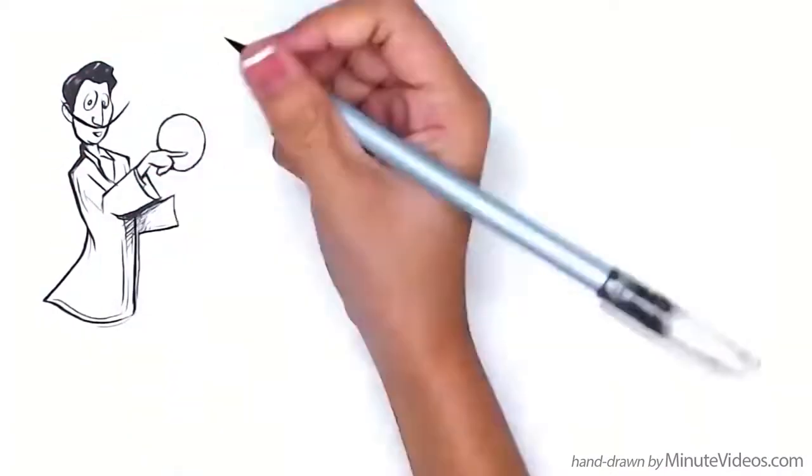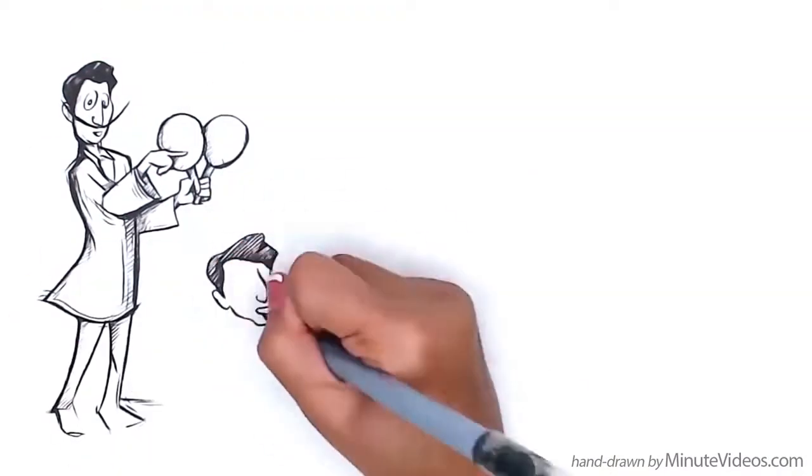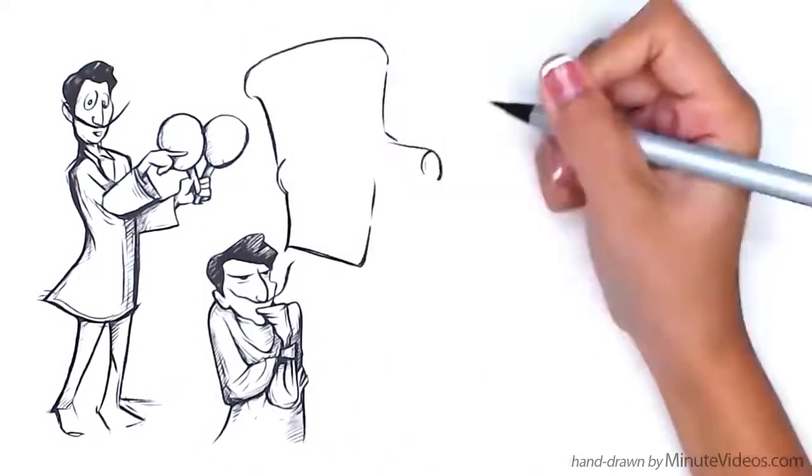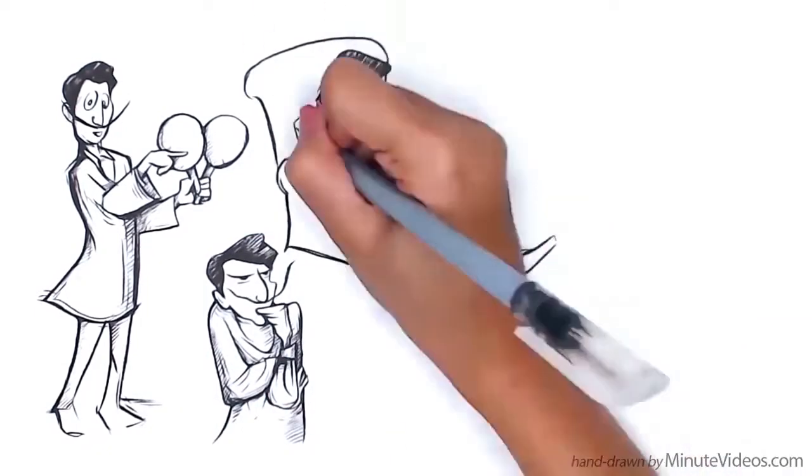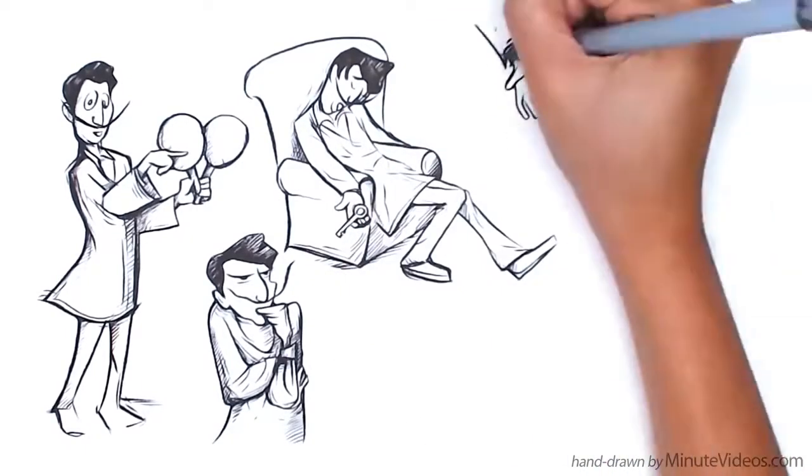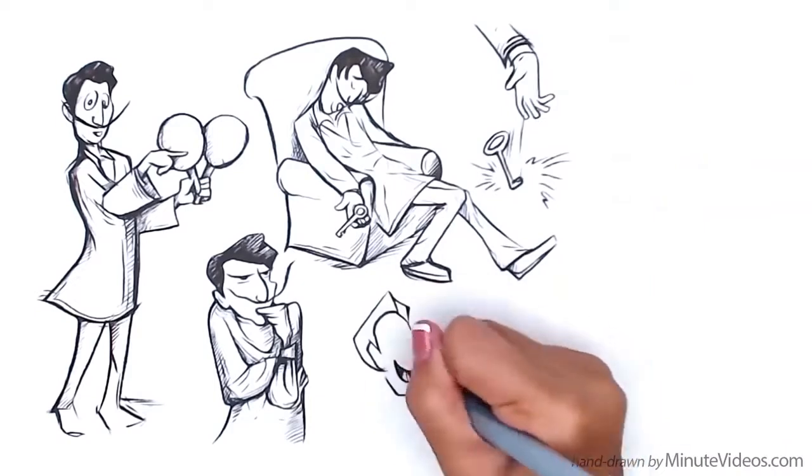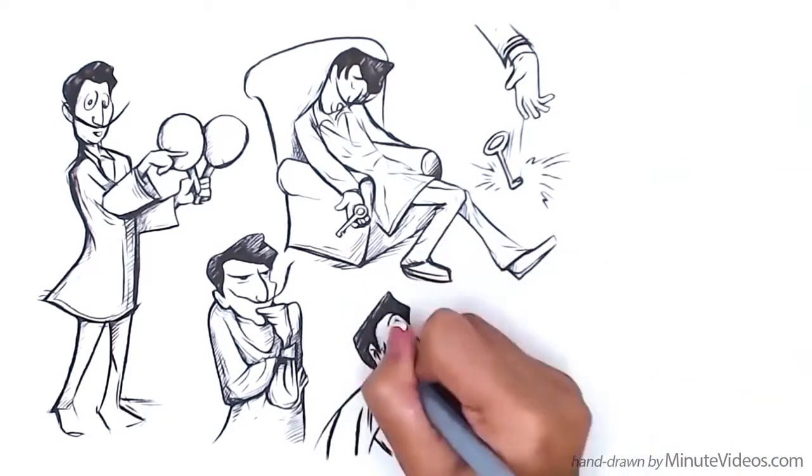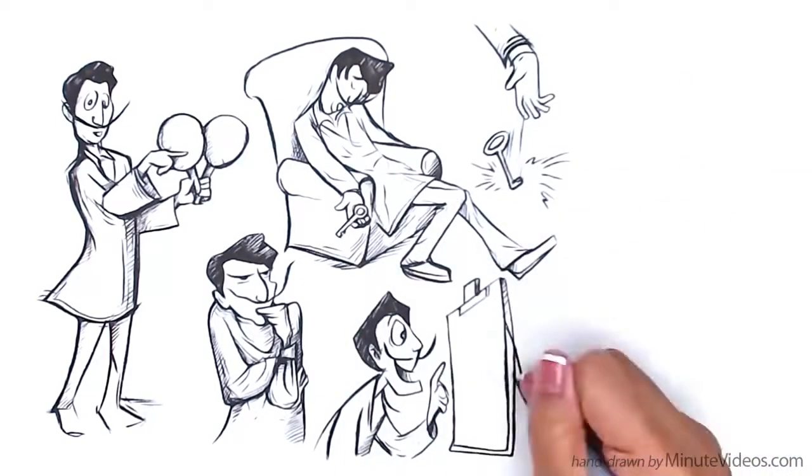Painter Salvador Dali was using the ping pong technique. After a round of focused work, Dali sat on his armchair to think and doze off. In one hand, he held a big key, and the moment he fell asleep, the key dropped. The sound of the key woke him, and he would go back to the canvas to continue his focused work.